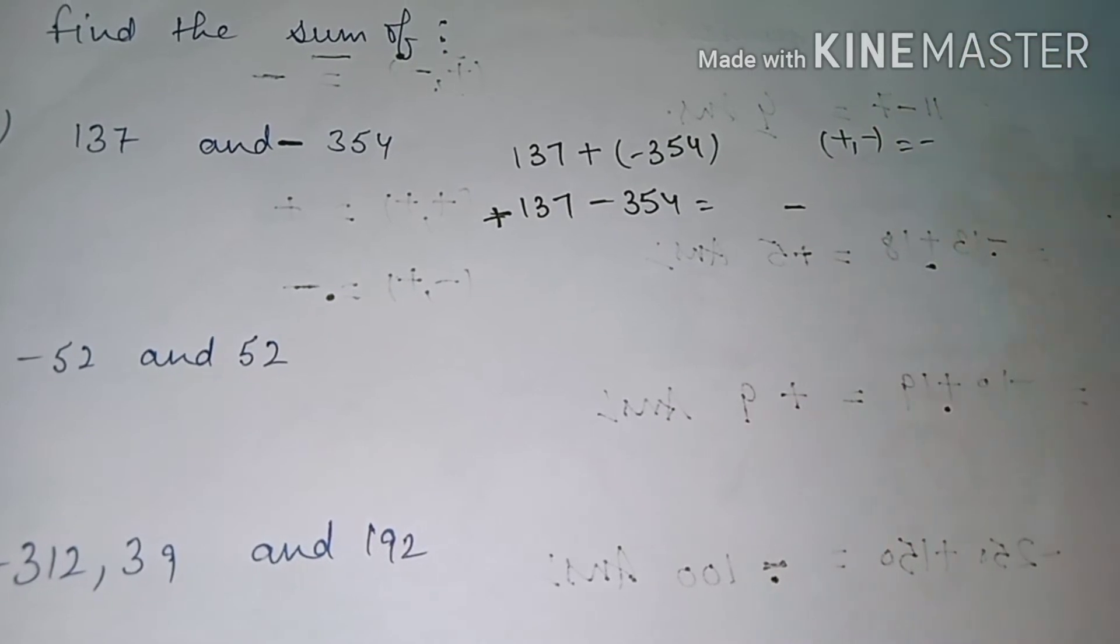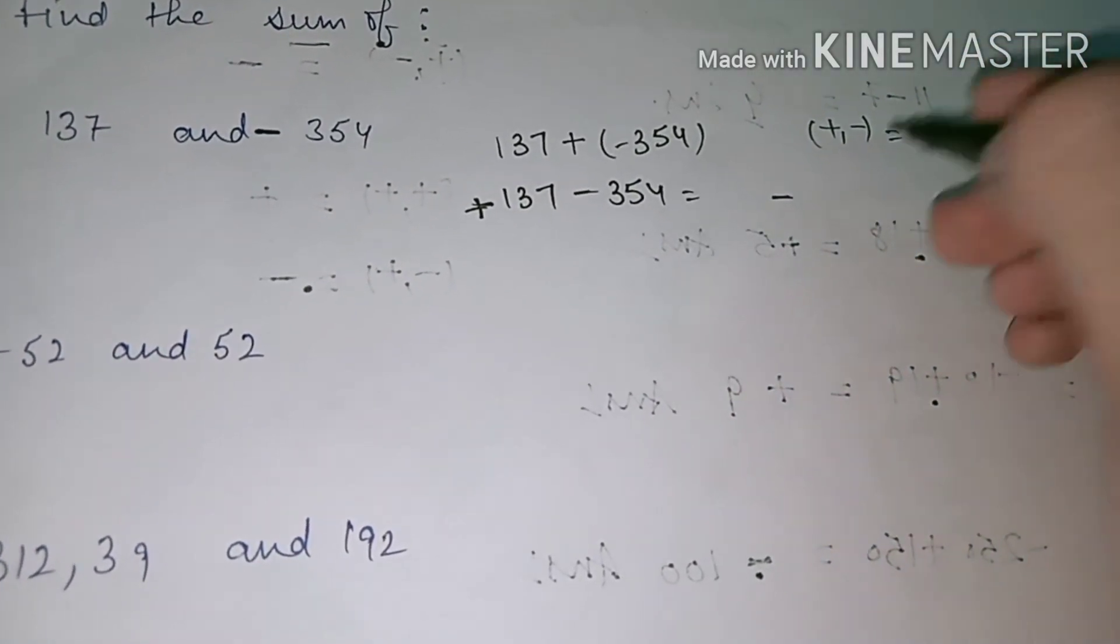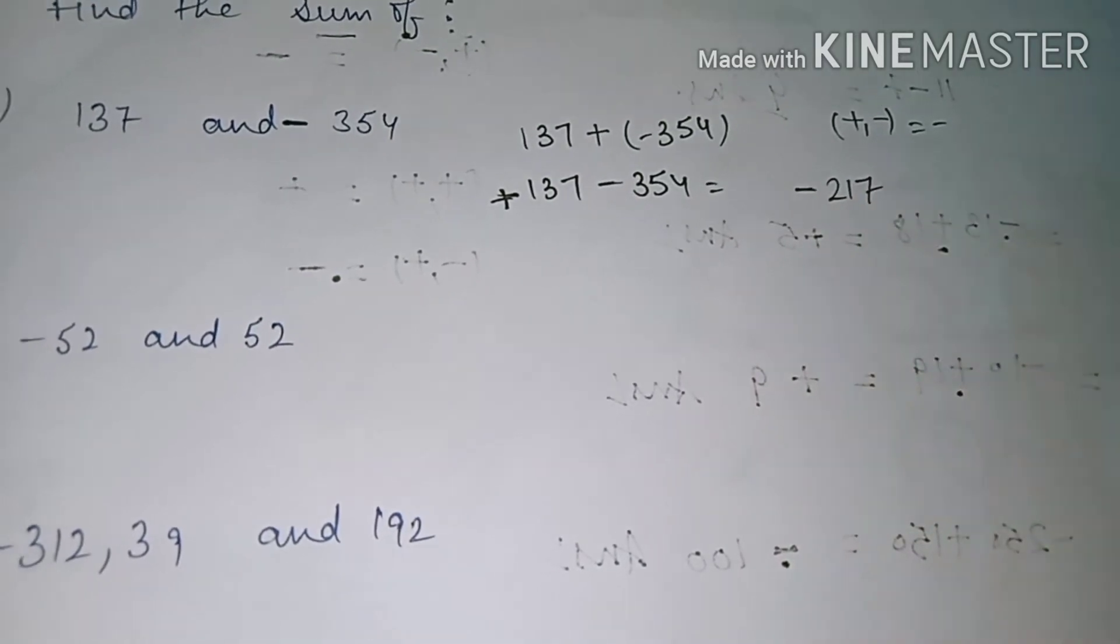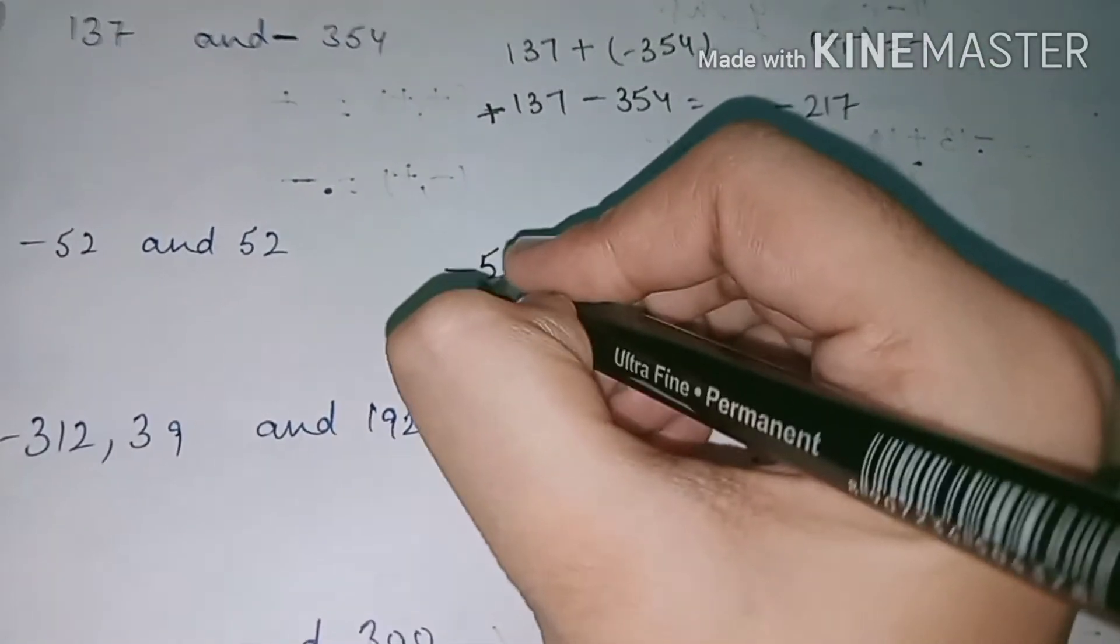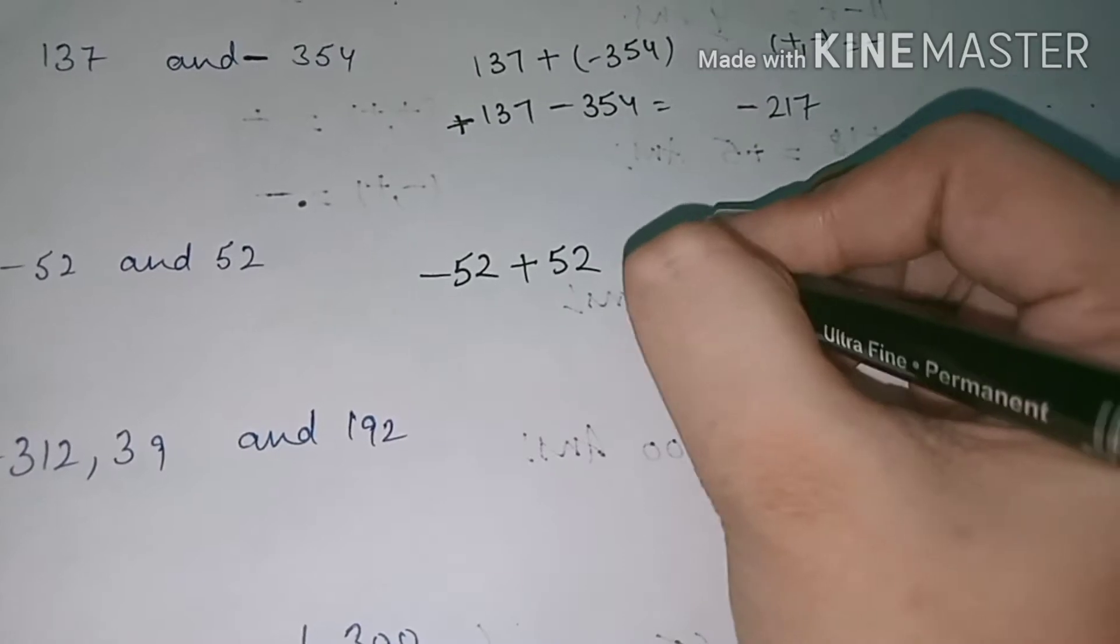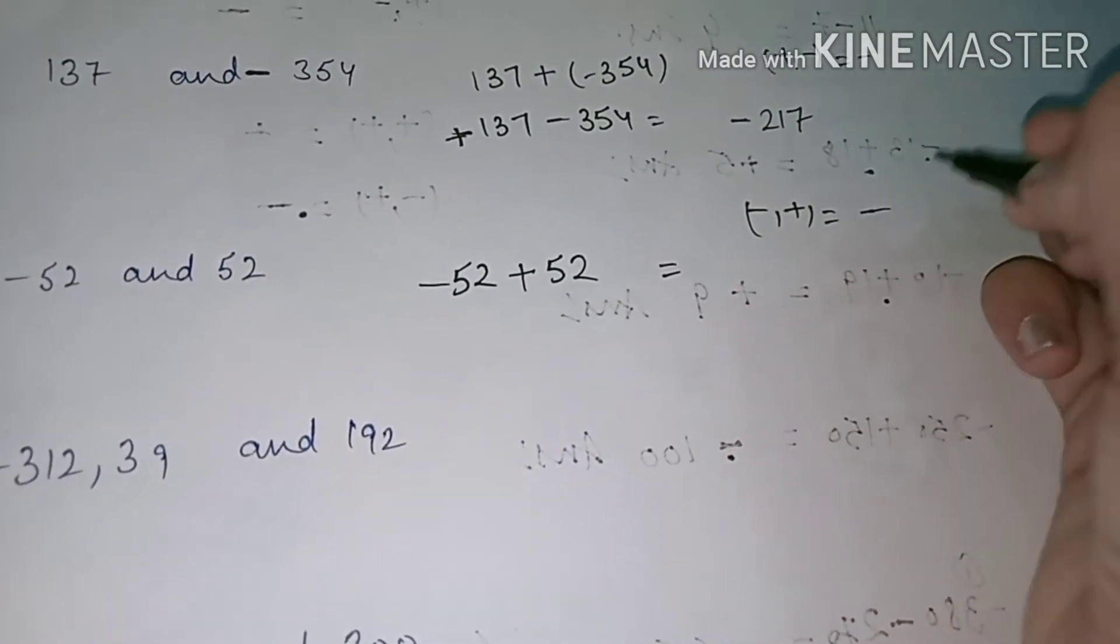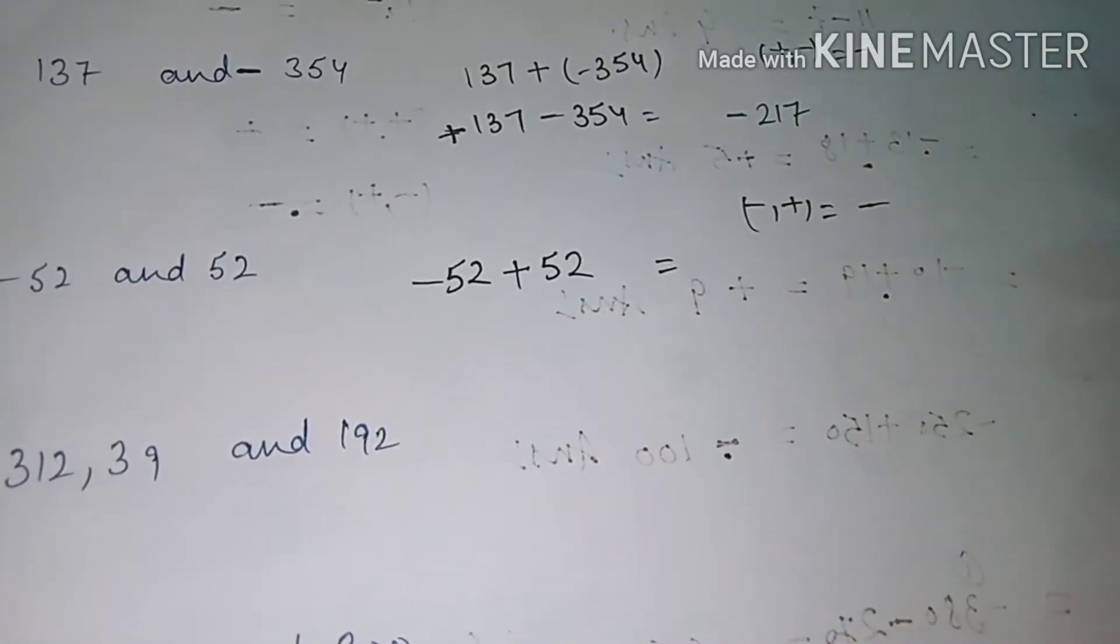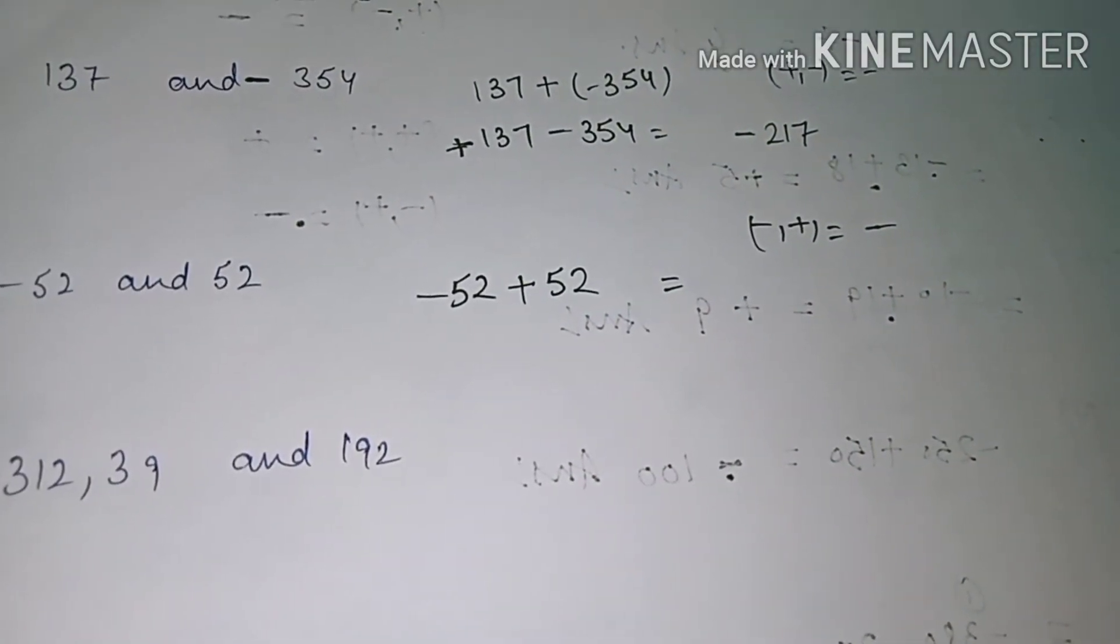Next is minus 52 and 52. Add minus 52 and plus 52. What do you do? Add. Minus plus minus. Minus 52 and 52. Minus 52, 52, what will change? Zero. Zero is neither negative nor positive.